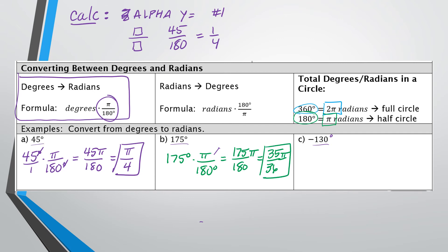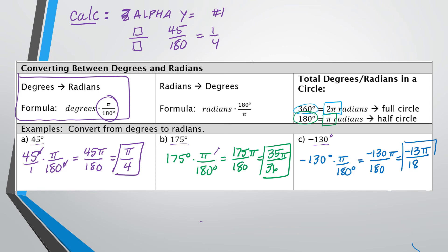This last one has a negative in front. It doesn't make the problem any more difficult — it just means the answer in radians will also be negative. Take negative 130 and multiply by π/180. In the calculator, put negative 130 over 180. It reduces to negative 13 over 18, and then put pi back in. Final answer: negative 13π over 18.